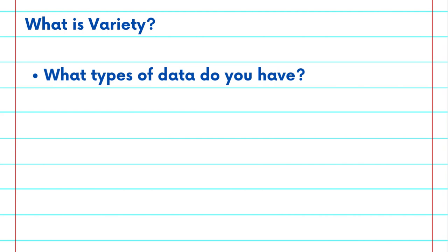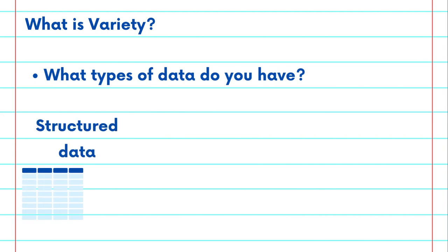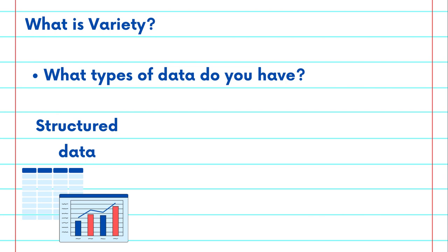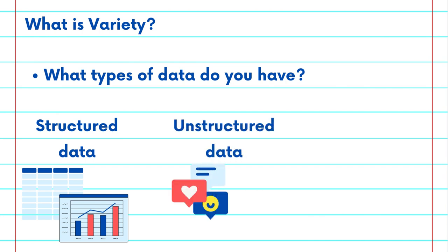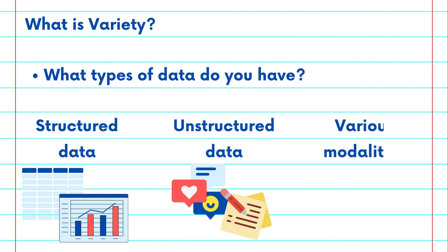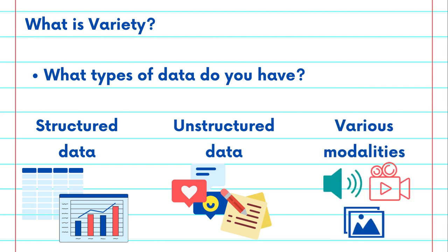Next, variety. There are many types of data. Structured data, such as data in a table or spreadsheet from sales revenue or lab results. Unstructured data, from social media or handwritten notes. And different modalities, such as audio and video and image data.